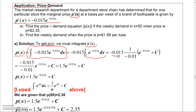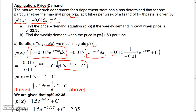I have negative 0.015 as a factor. When I integrate, I get one over negative 0.01, so I have negative 0.015 over negative 0.01 times e to the negative 0.01X plus a constant. Dividing that out gives 1.5 e to the negative 0.01X plus the constant.